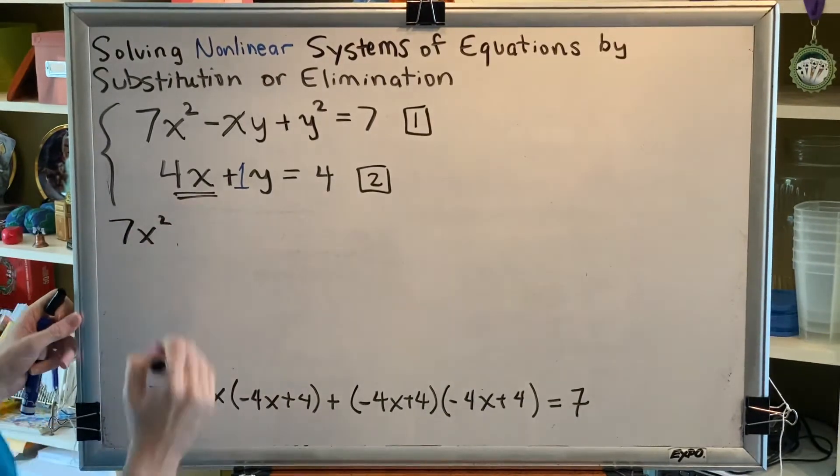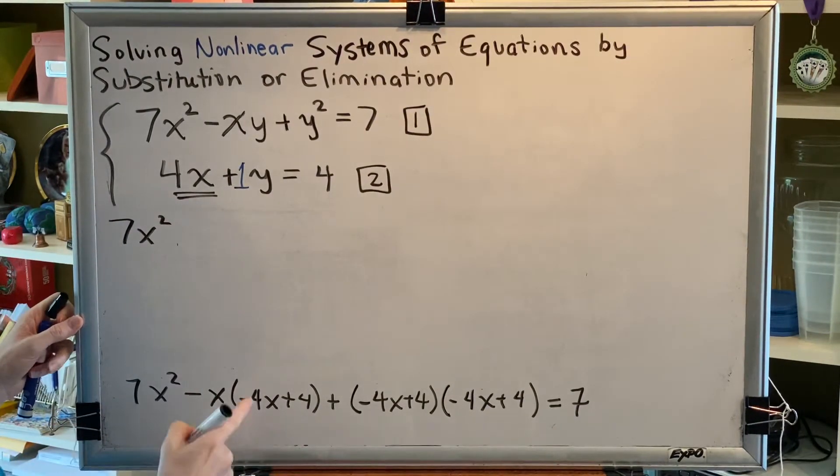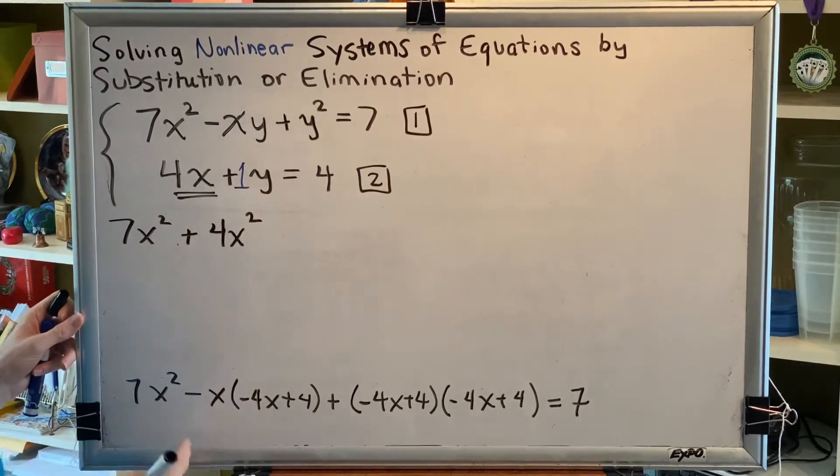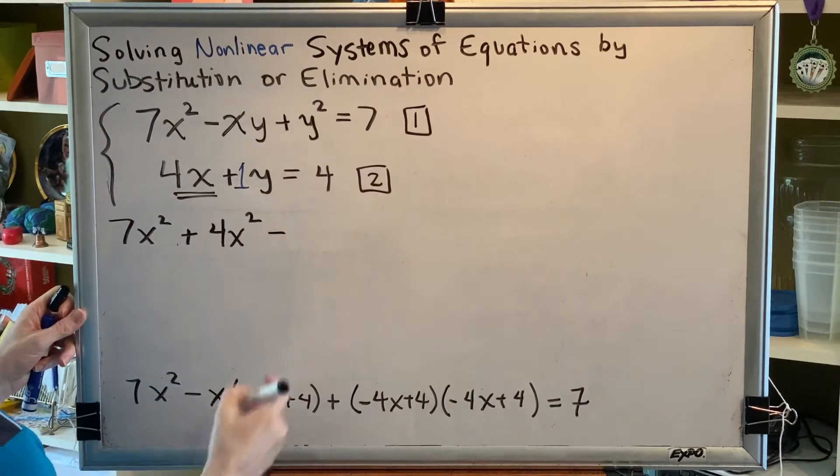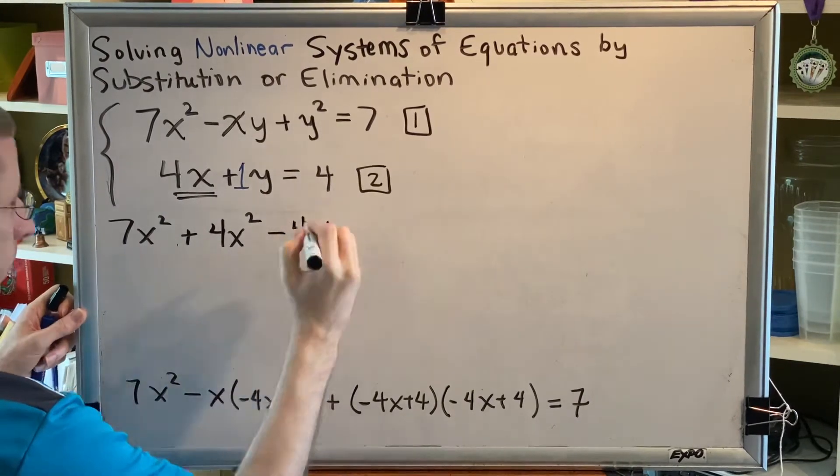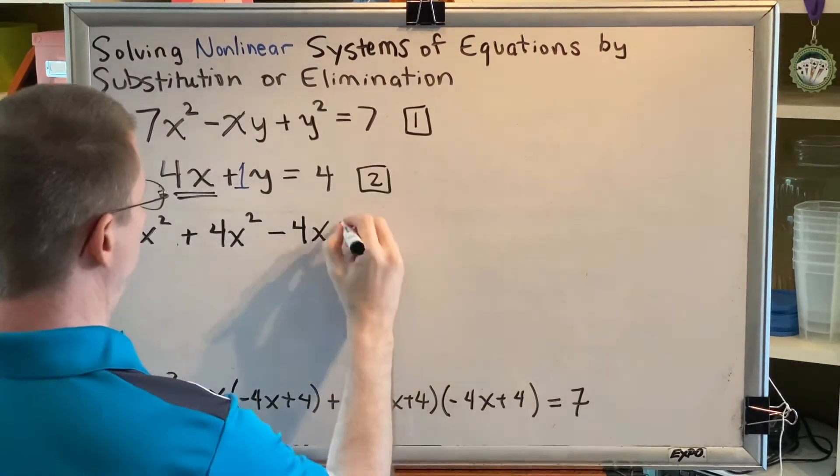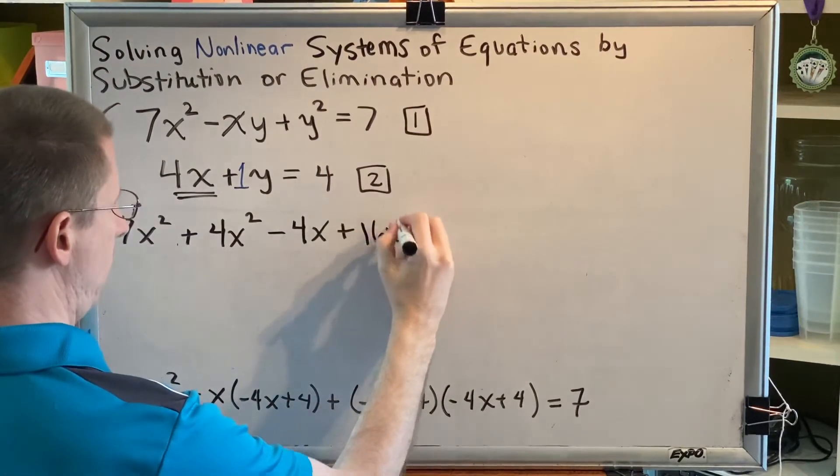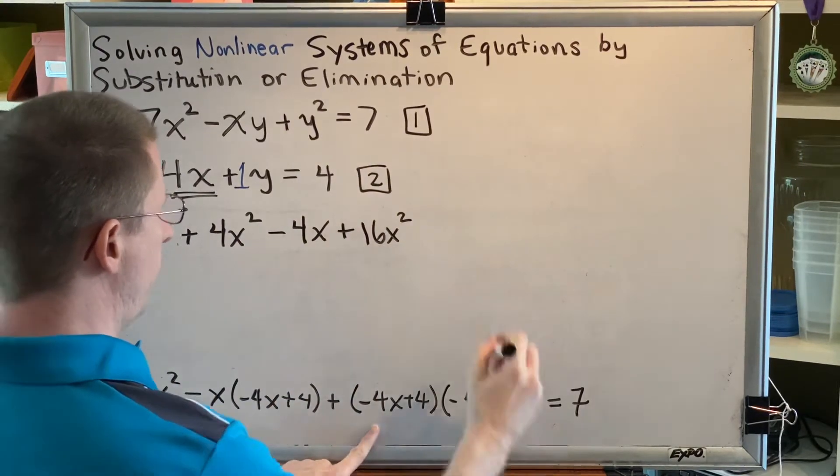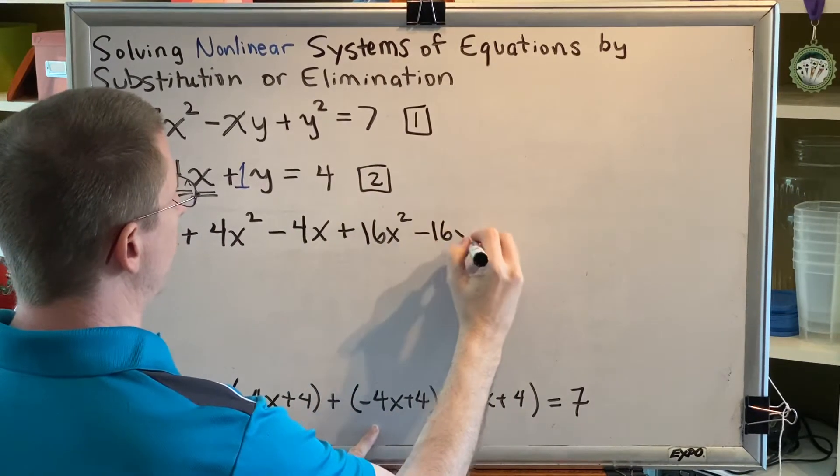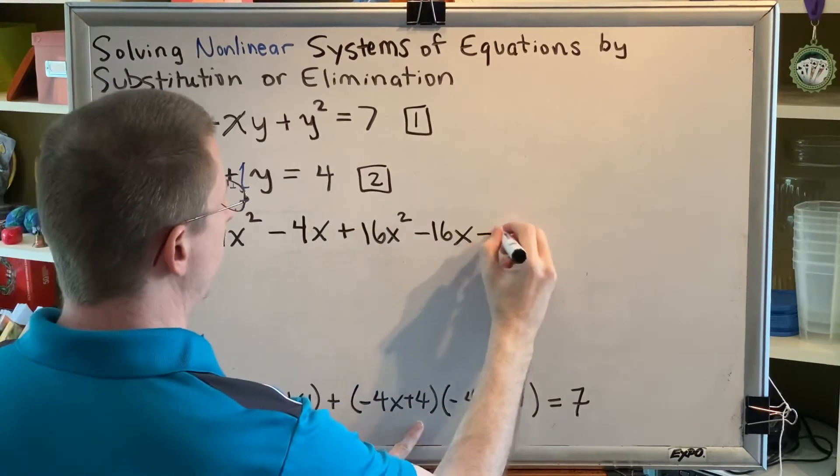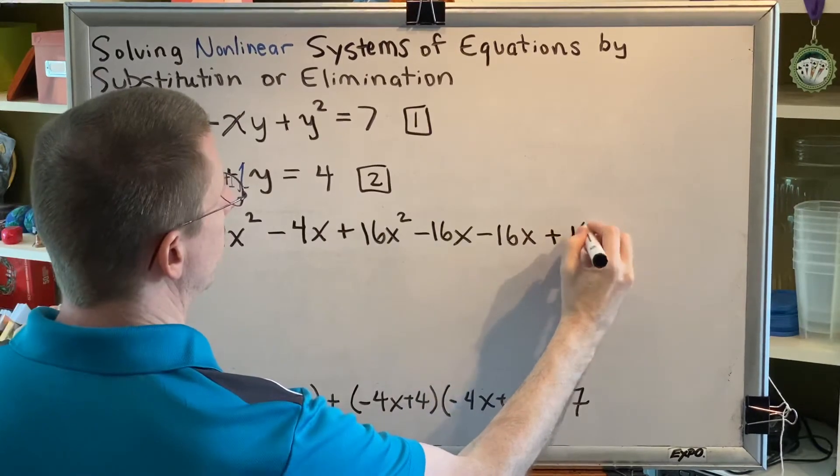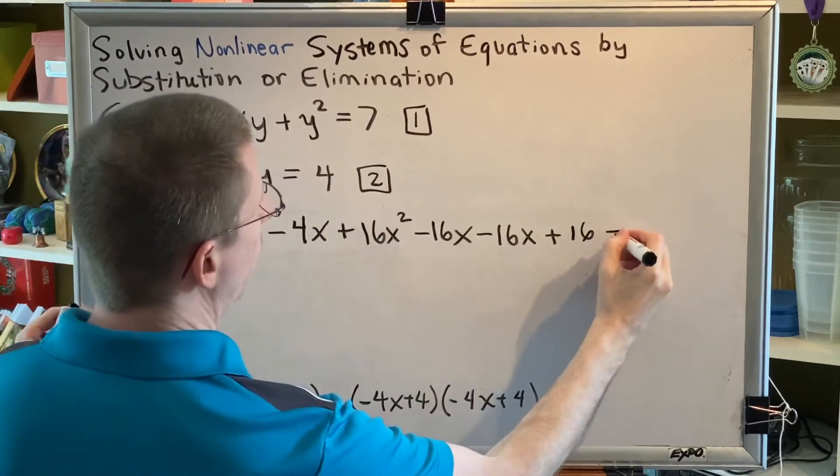Here we go. 7x squared. We're going to go ahead and distribute here. A negative times a negative is a positive, and 4x times x is 4x squared. A negative times a positive is a negative, and x times 4 is 4x. And then here comes the FOIL. So negative 4x times negative 4x is positive 16x squared. Negative 4x times 4 makes minus 16x. 4 times negative 4x makes minus 16x. And 4 times 4 is 16. Then we still have equals 7.